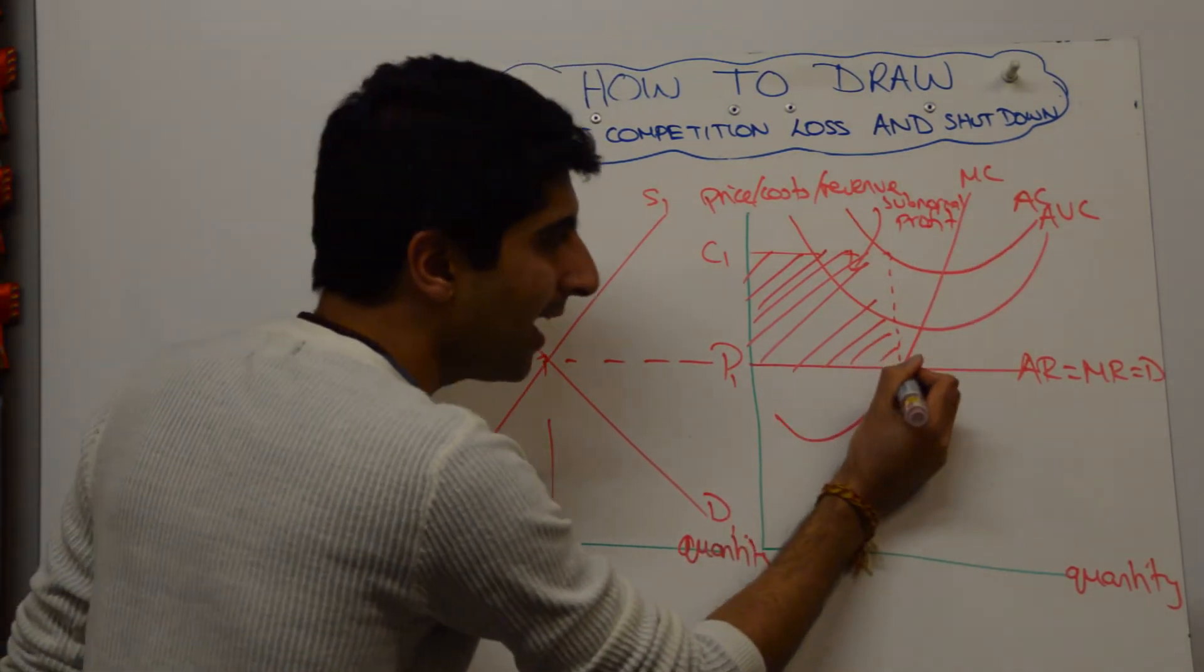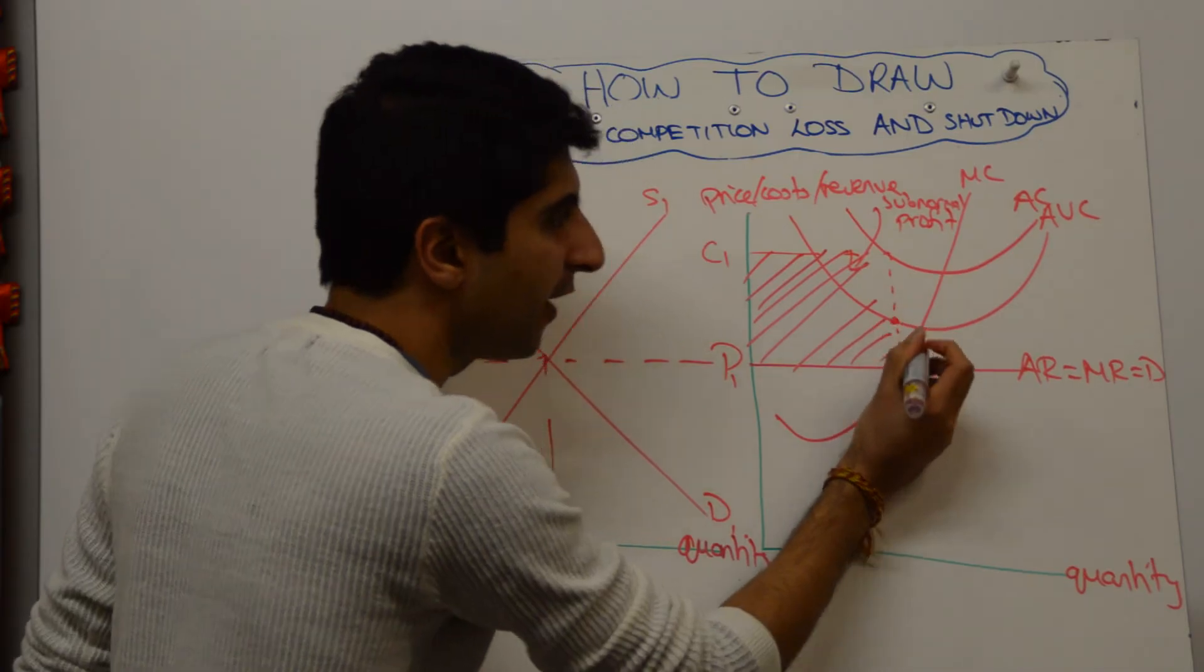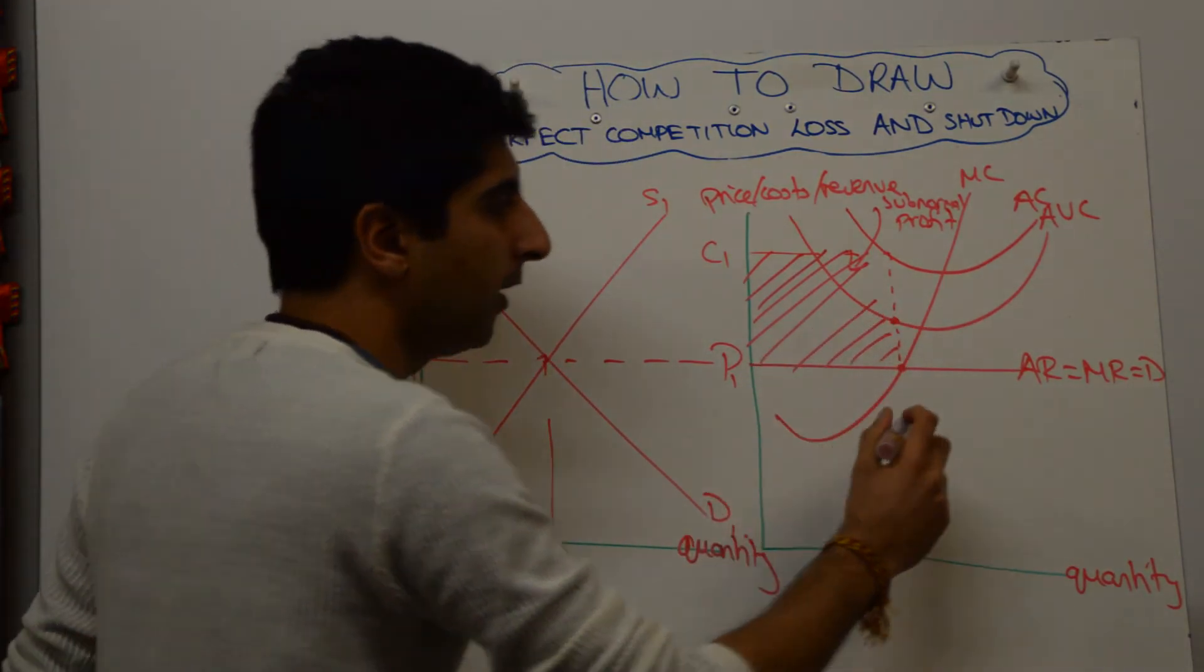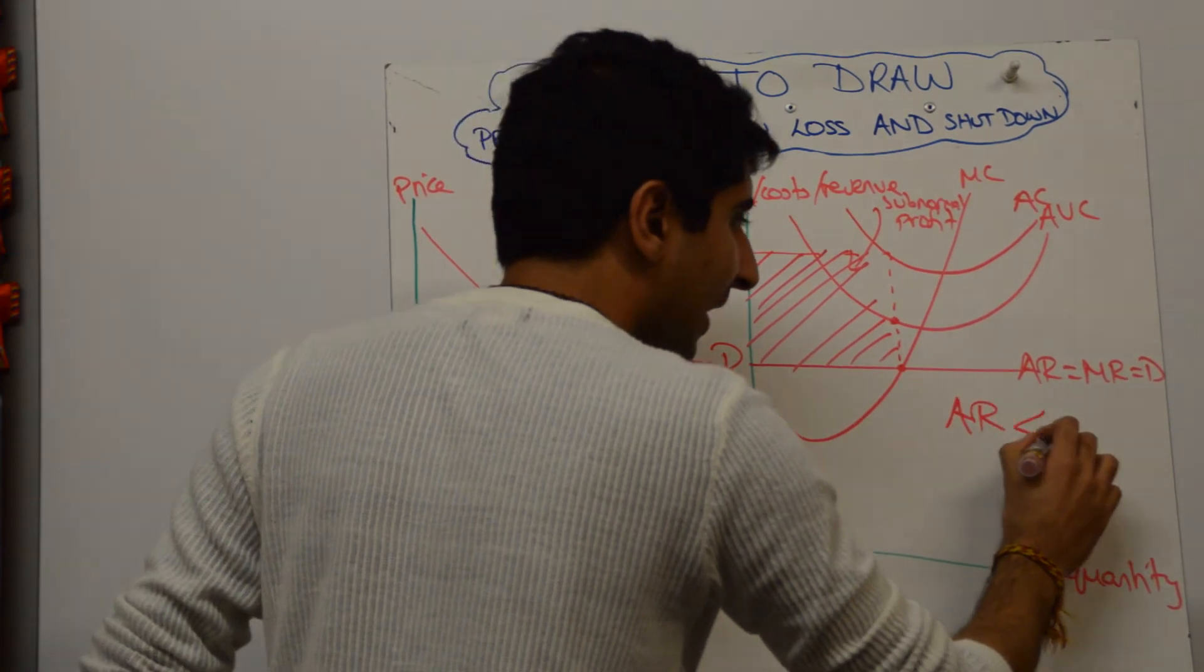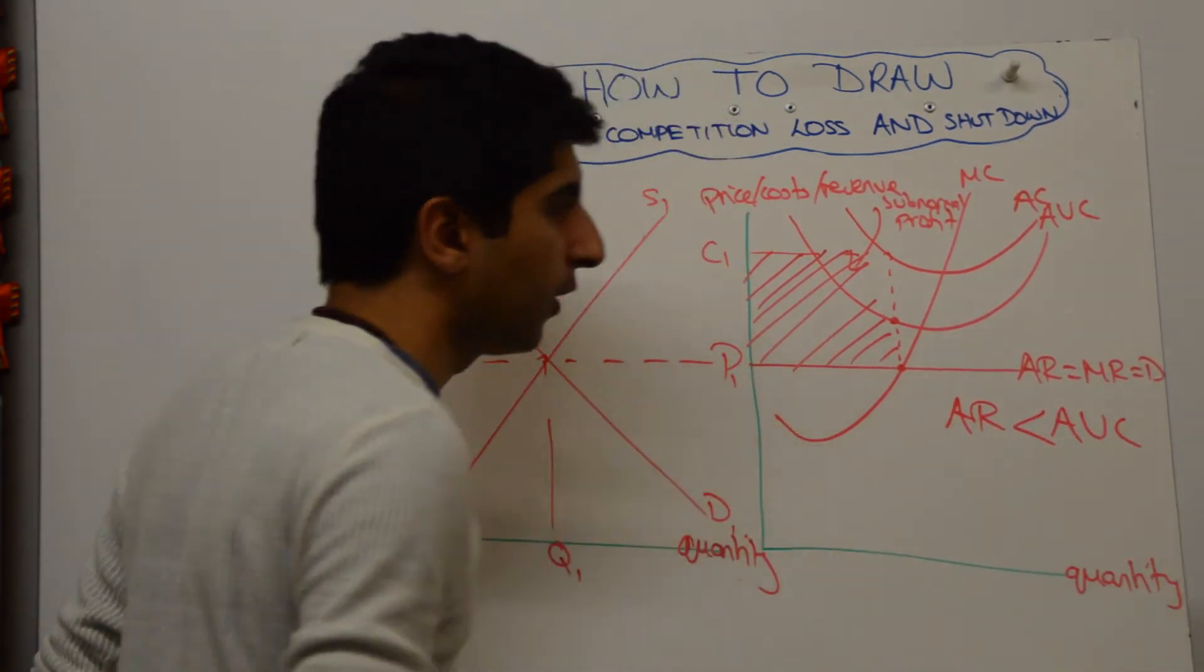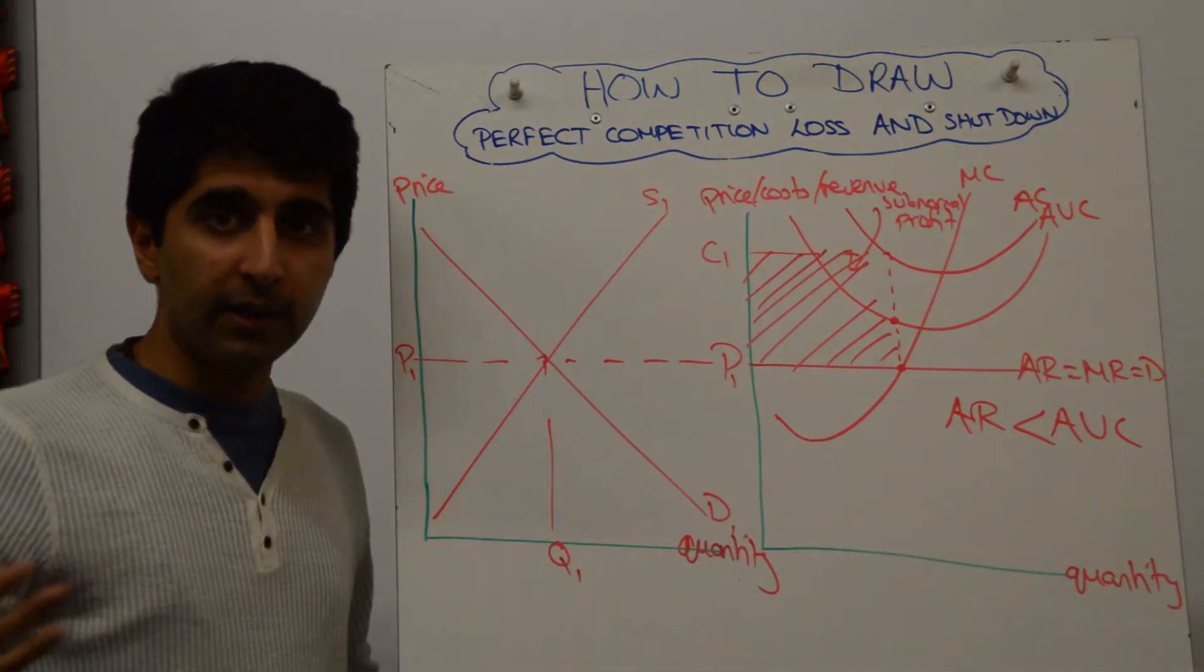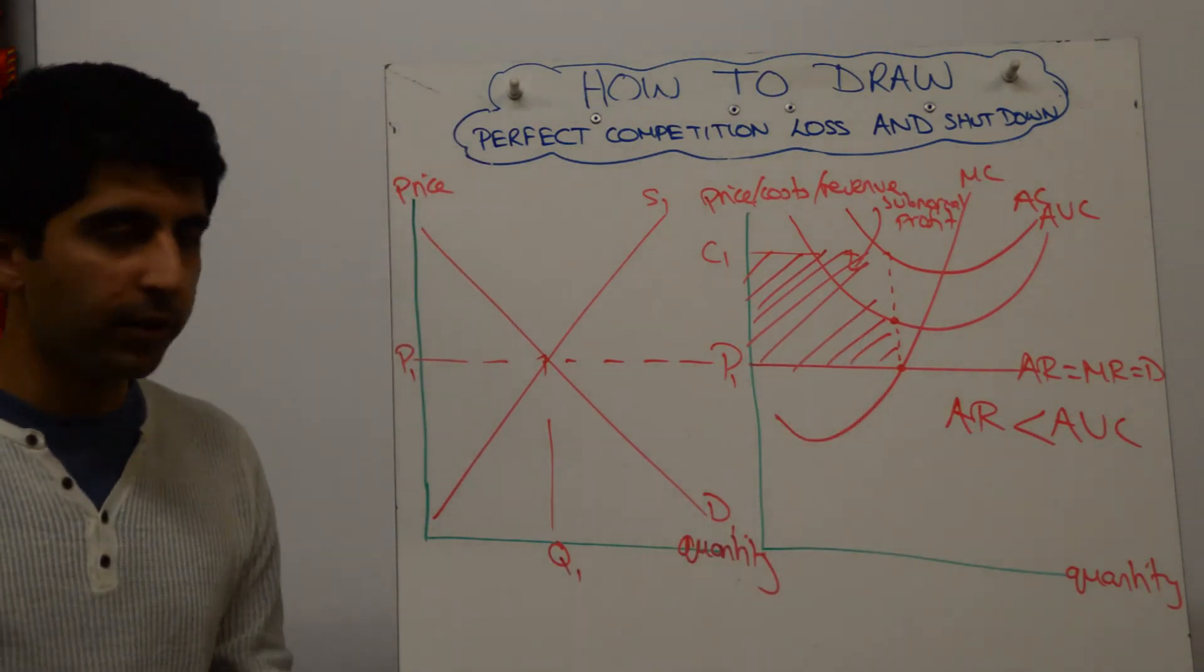What we're also showing is that AR is less than average variable cost. So average variable cost is this red dot here. What we're showing is that AR is less than the average variable cost. Therefore, this firm should shut down as the shutdown condition is not being met. AR is less than AVC.